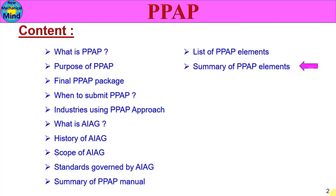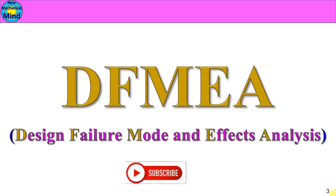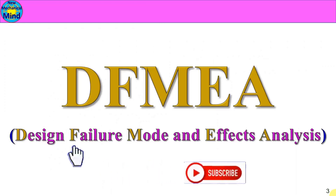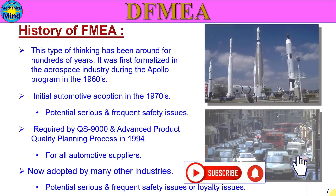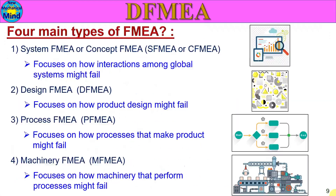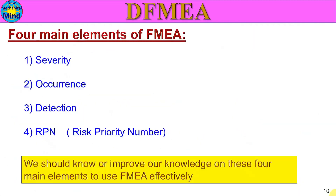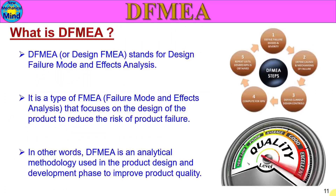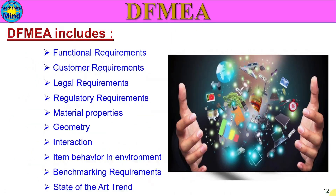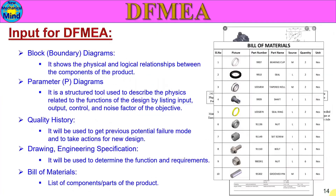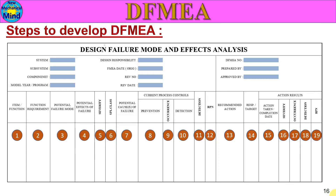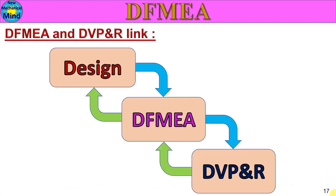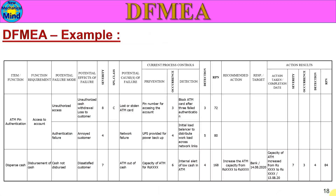In the P-POP series, we will see a summary of P-POP elements. In this video: DFMEA - Design Failure Mode and Effect Analysis. Topics include: What is FMEA, Why FMEA is Required, History of FMEA, When to Conduct FMEA, 4 Main Types of FMEA, 4 Main Elements of FMEA, What is DFMEA, DFMEA includes, When to Conduct DFMEA, Input for DFMEA, DFMEA Approach, Steps to Develop DFMEA, DFMEA and DVP and R Link, and DFMEA Example.